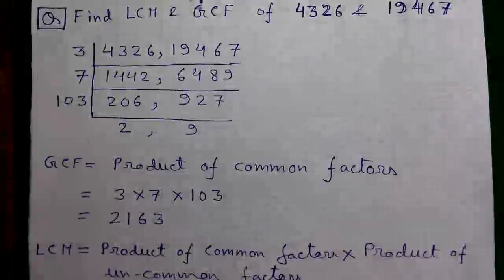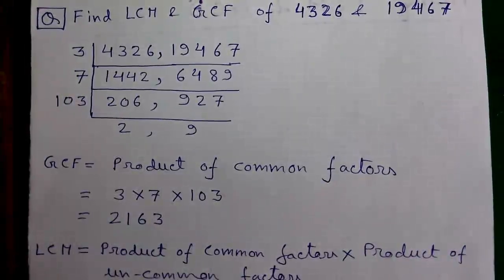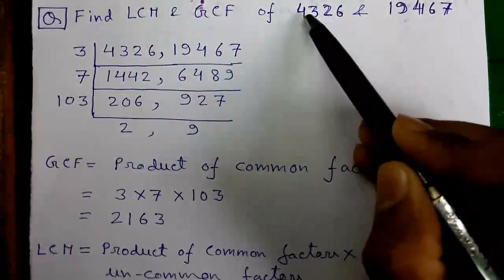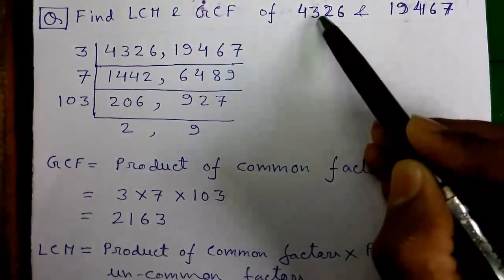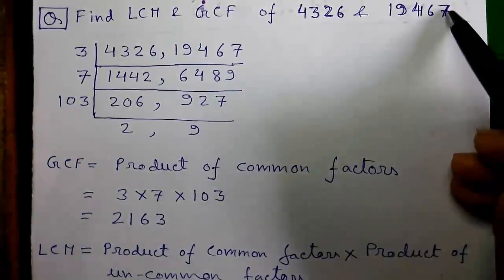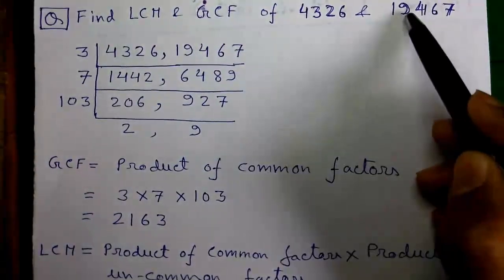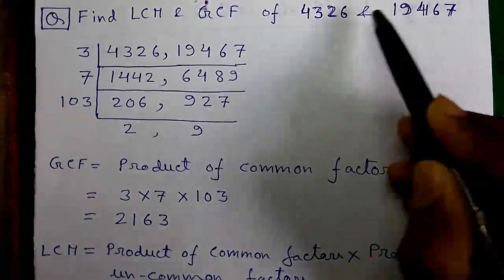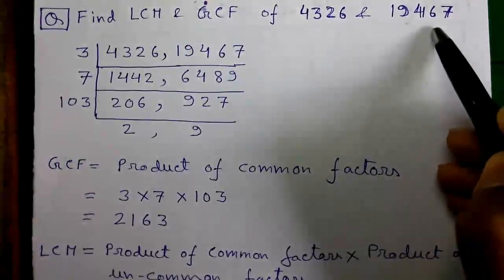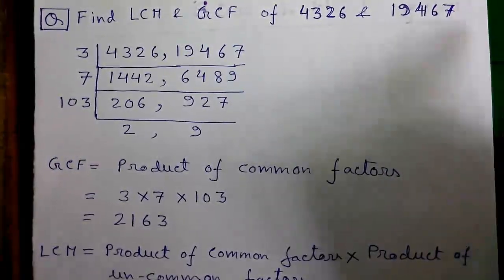If you couldn't get it for the first time, I will do another math for you. Let's find out the LCM and GCF of 4326 and 19467. The process is same. Consider the largest number as A and the smallest number as B, and continuously perform A minus B operation until you get a minus or a zero.